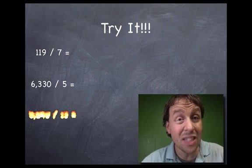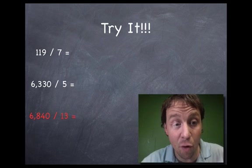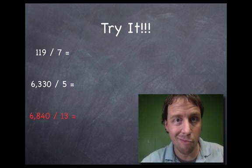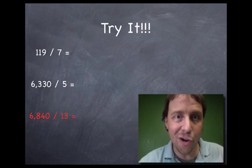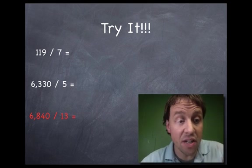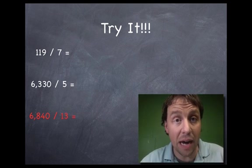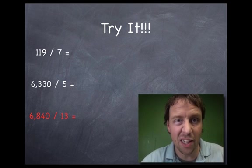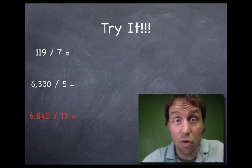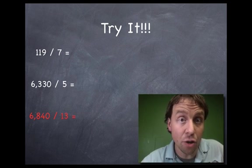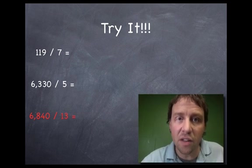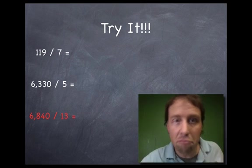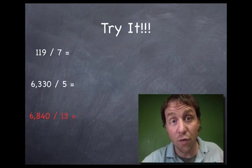And then the last one, this one does have a remainder. That's why I wrote it in red, red for remainder. 6,840 divided by 13. If you check your last one with a calculator, you'll get a decimal. So you might want to ask somebody who knows how to do long division what the remainder should be. If you can't check it yourself, or you can just be confident that, hey, if there's a remainder there, you got a good chance of getting it right. Whatever works for you.